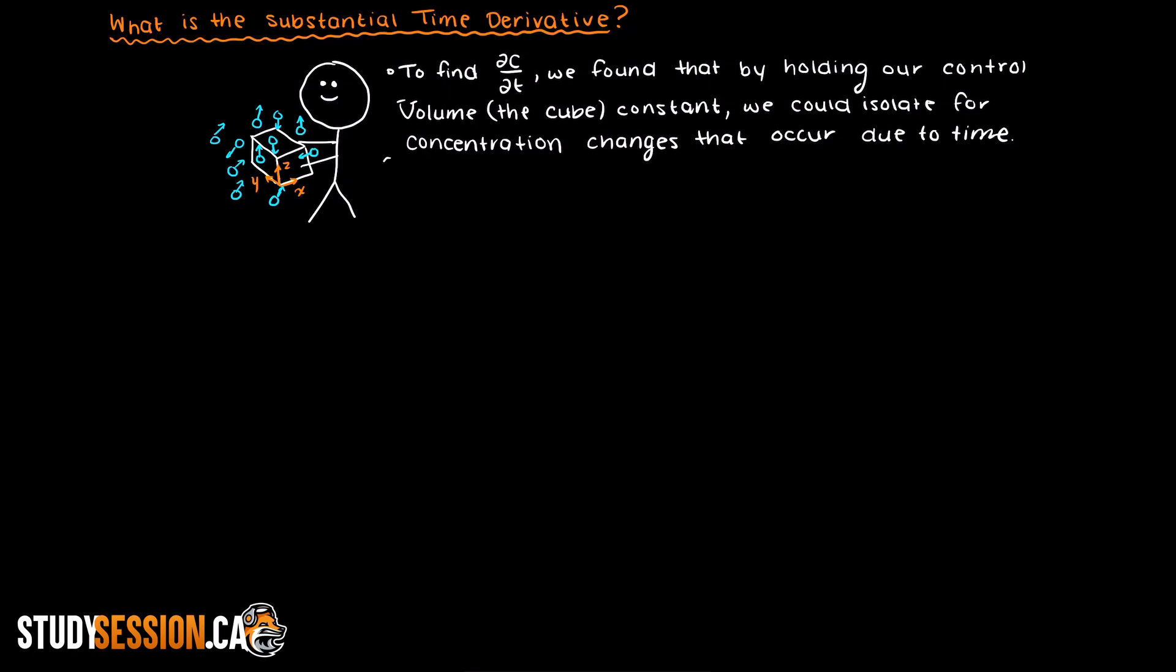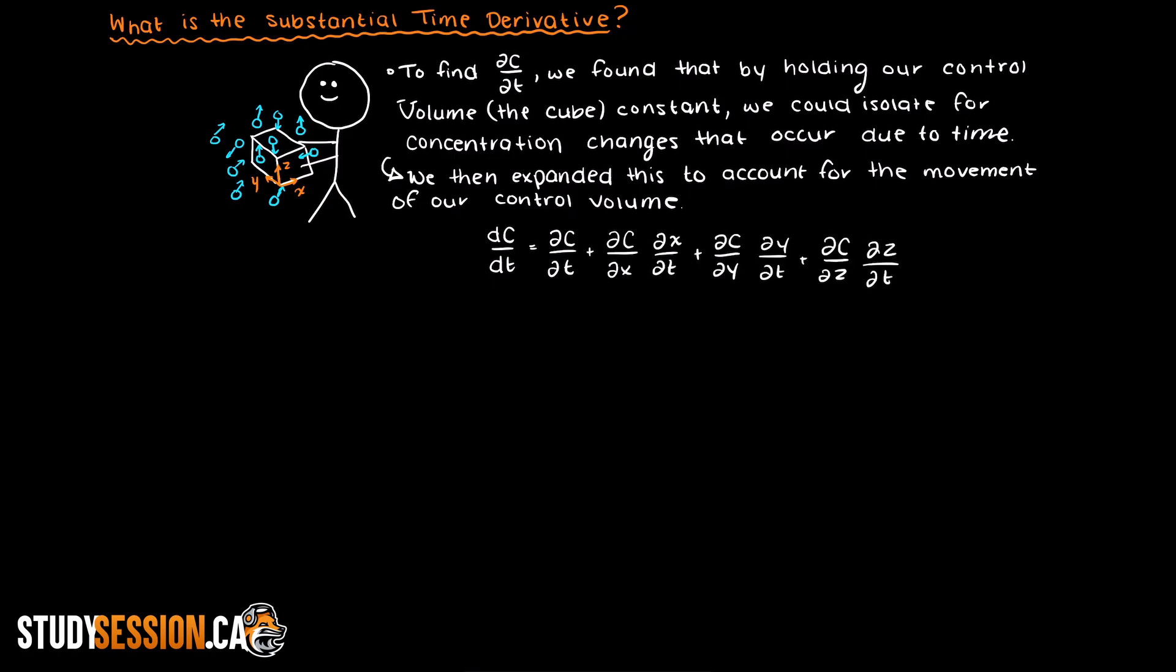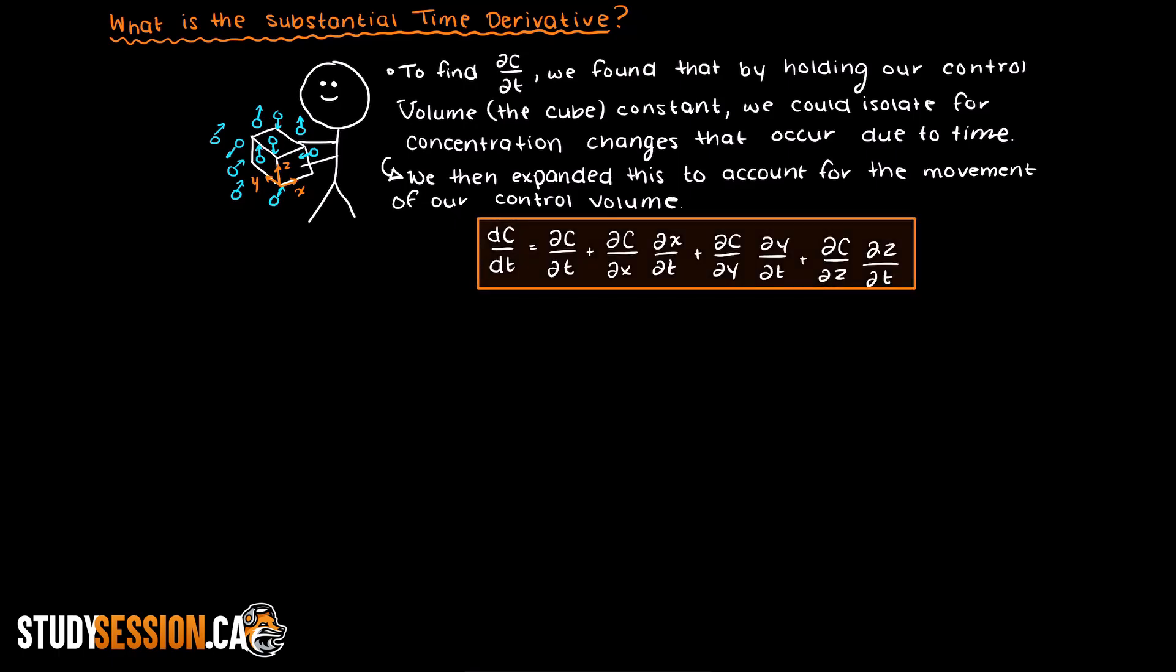We then expanded this idea and said, well what if our control volume is moving around the room as we walk around? Well then we need a total time derivative, which is the summation of the partial derivatives for all the components that make up our multivariable concentration function. This was represented by the following equation.